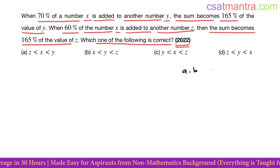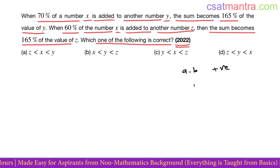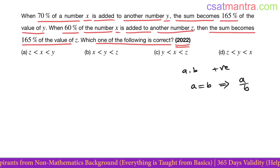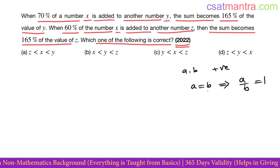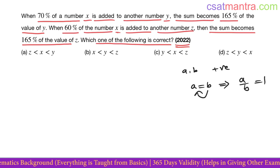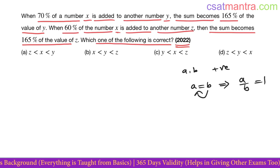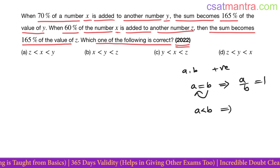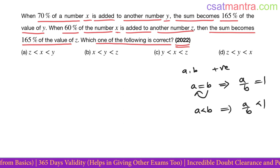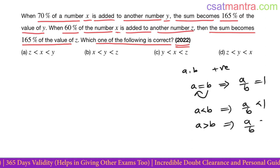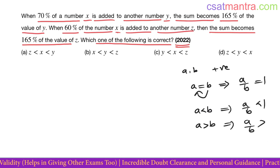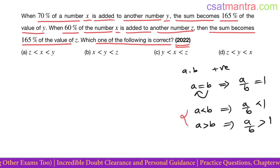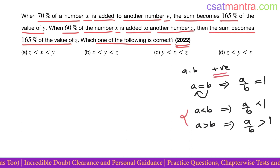Say a and b are positive numbers. If a equals b, you can write the ratio a/b as 1. When a is less than b, a/b is less than 1. When a is greater than b, a/b is greater than 1. These two inequalities hold true for positive values.